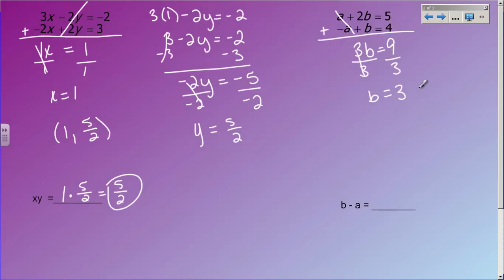Now to find a, I have to substitute what I know into either of the other equations. I'm going to use the top one because a is positive. So I'm going to do a plus 2 times 3 equals 5. Well, 2 times 3 is 6.